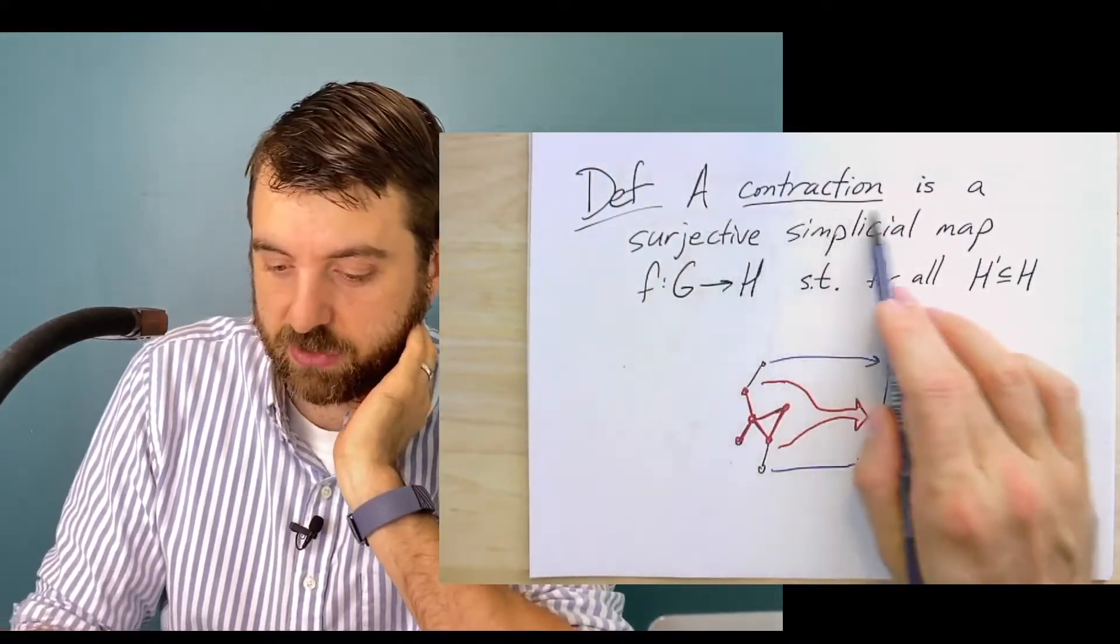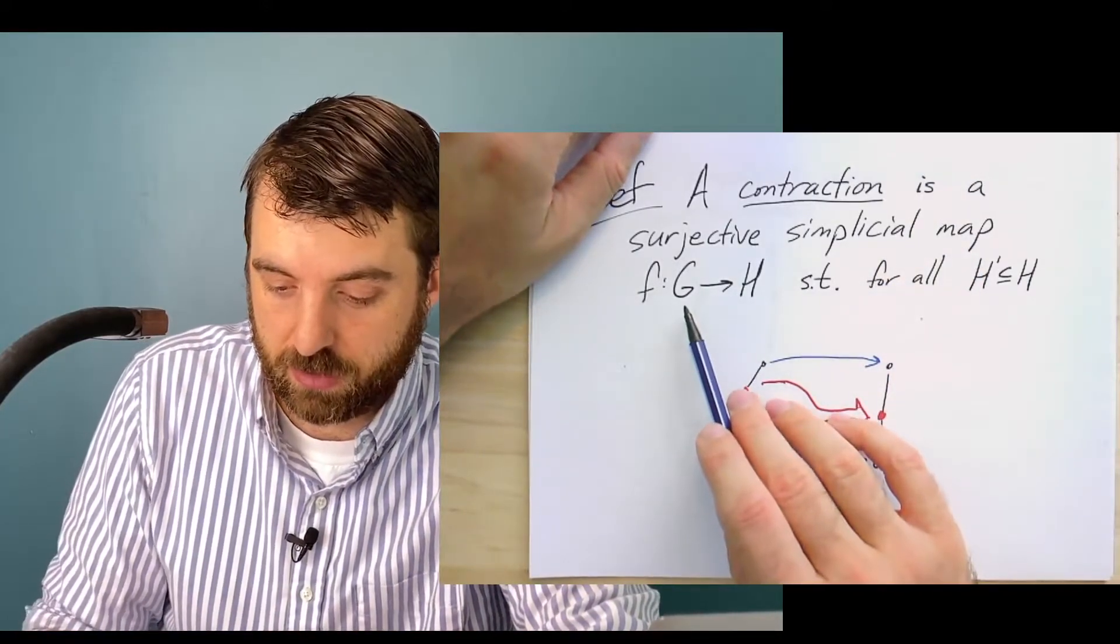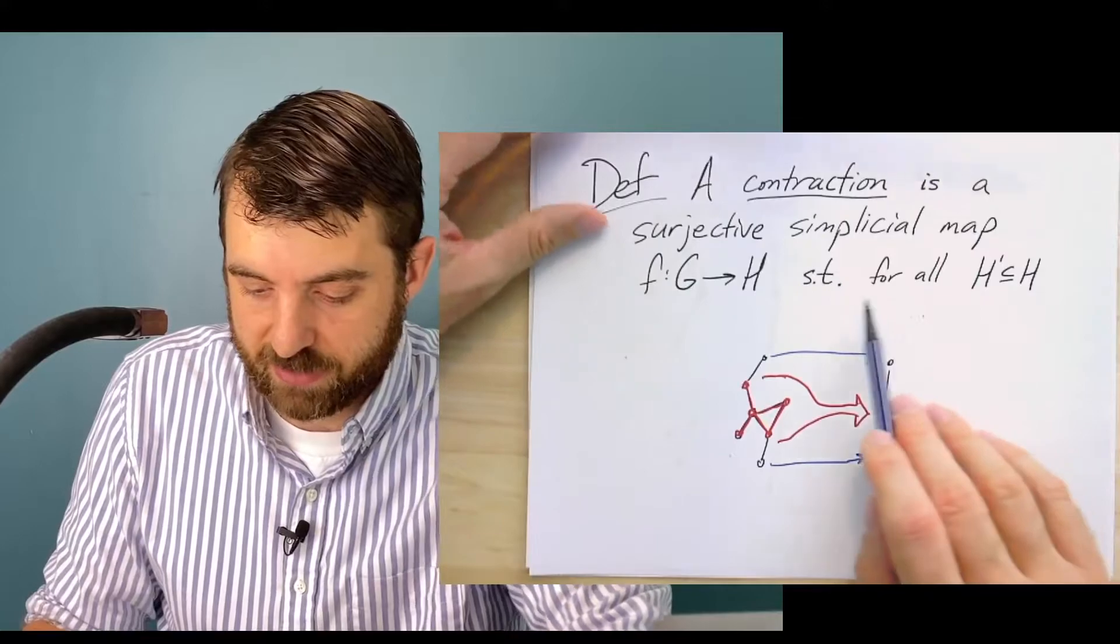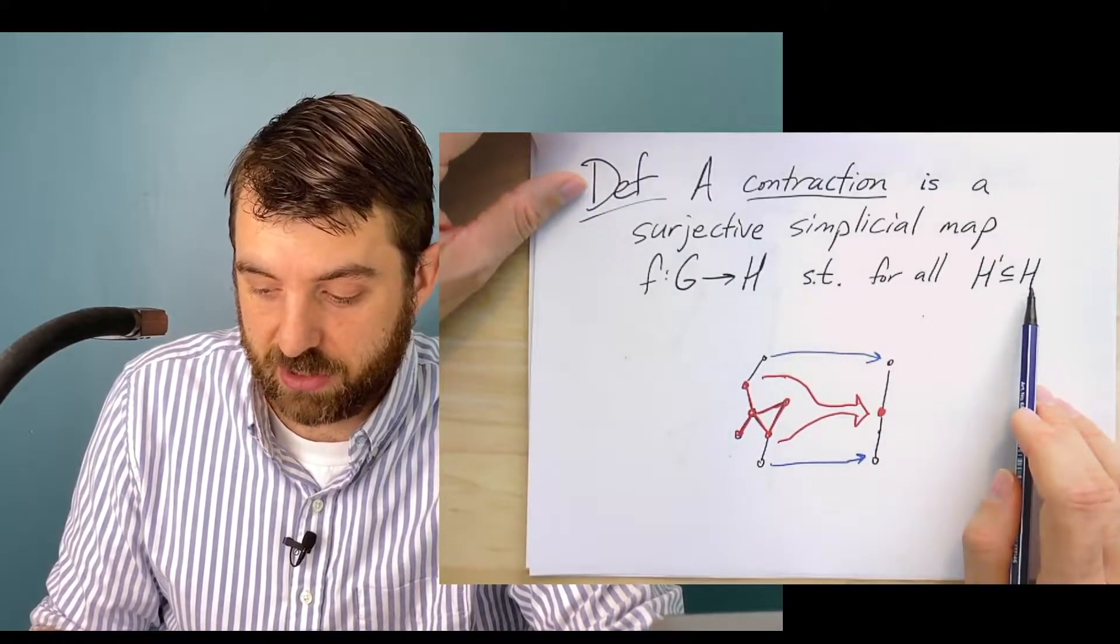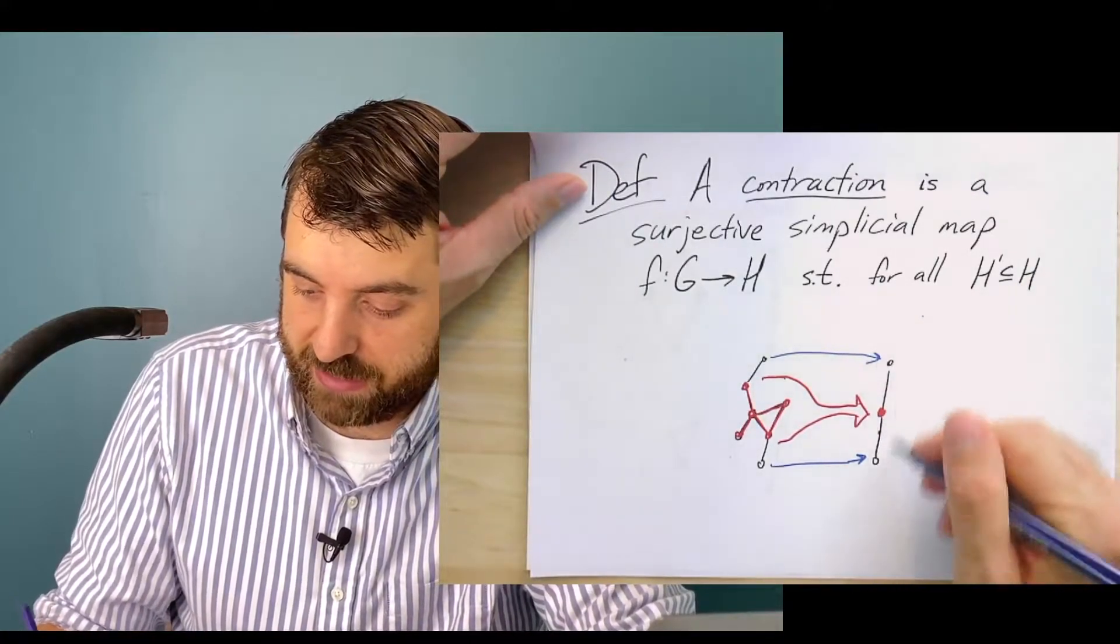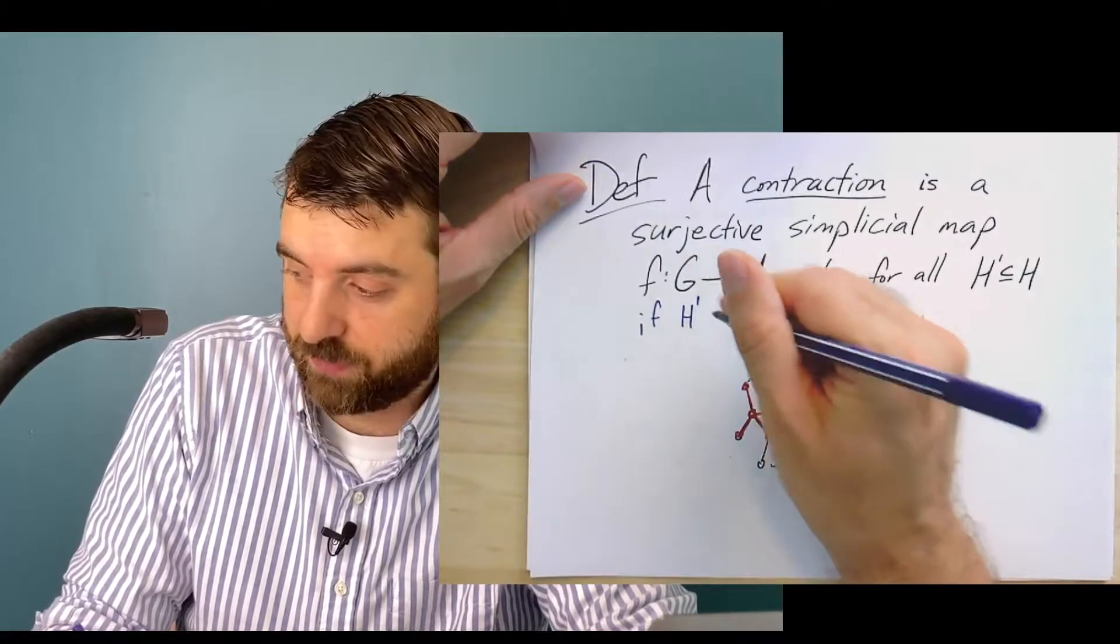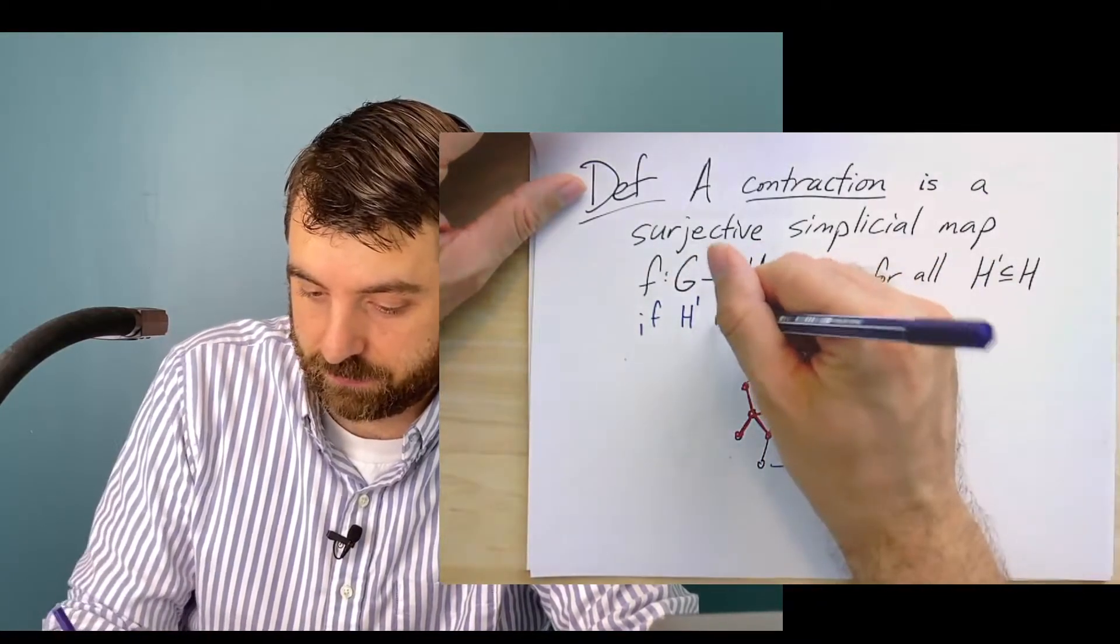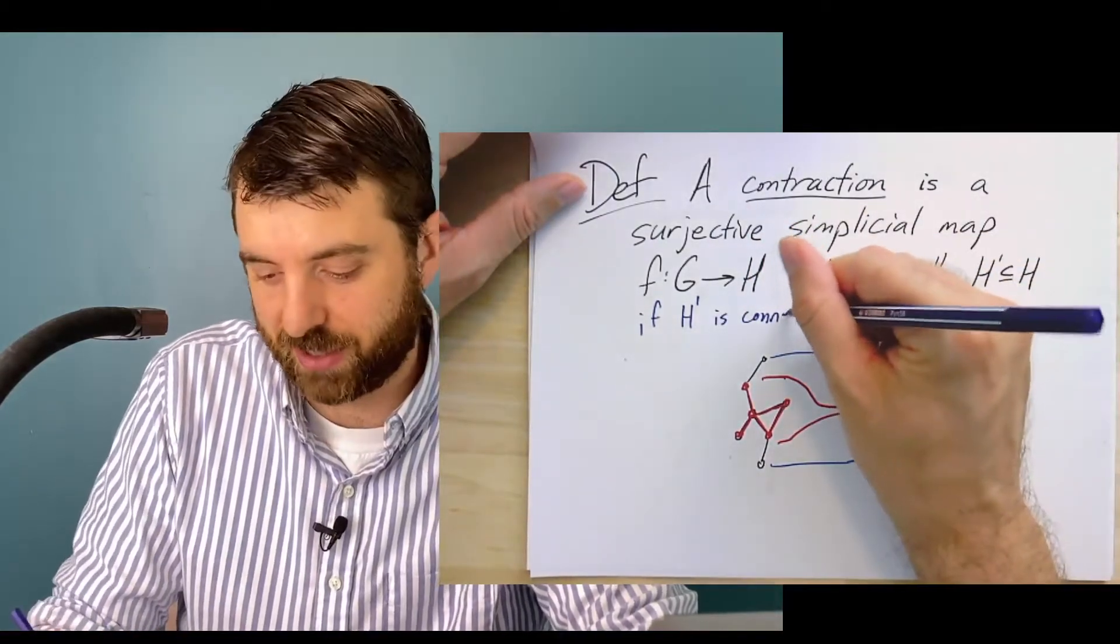So a contraction will be a surjective simplicial map. And here I'm doing it from graphs to graphs such that for all subgraphs of H, this is a subgraph. So I take any subgraph over here, if that subgraph is connected, then the preimage is also connected.